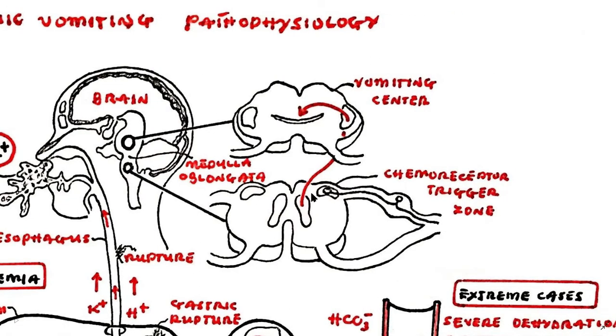The chemoreceptor trigger zone, which is abbreviated as CTZ, is an area of the medulla oblongata that receives inputs from blood-bound drugs or hormones and communicates with other structures in the vomiting center in order to initiate vomiting.